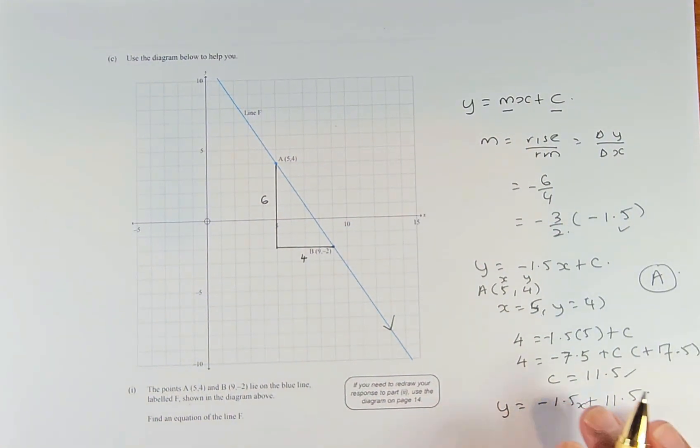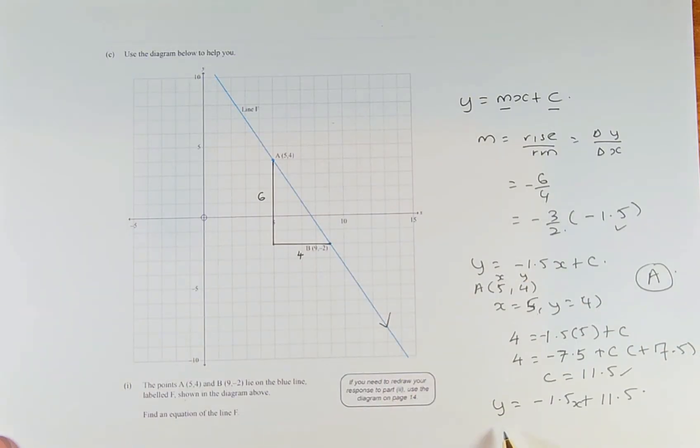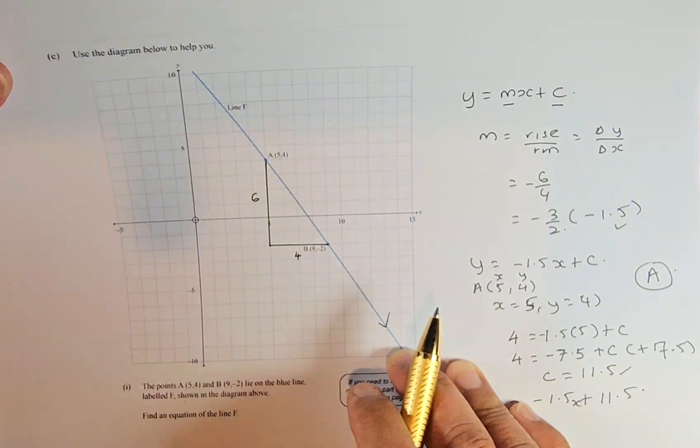In 3C part 1, we were asked to find the equation of this line and we found that y = -1.5x + 11.5. We're going to transfer this into the next part, which is 3C part 2.